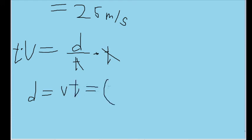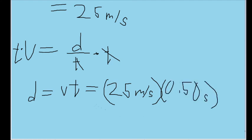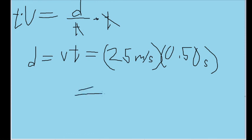So now let's plug in our values. We are moving at 25 meters per second and we are moving for 0.50 seconds. Plugging this into our calculator, or just doing it in your head, you get 12.5 meters.